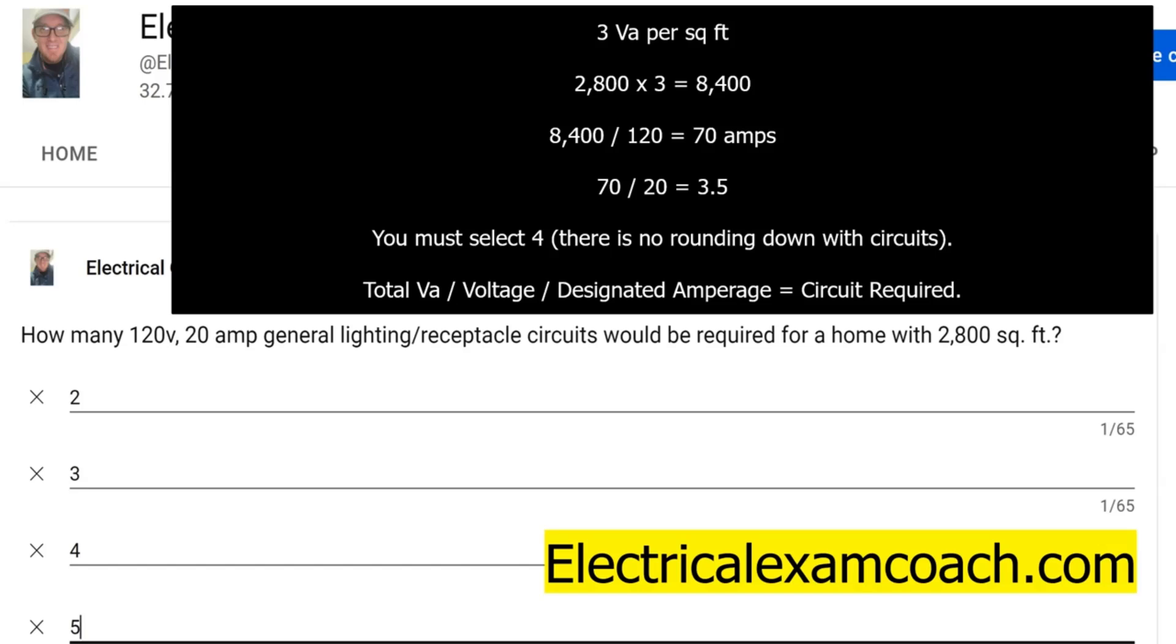When we divide that out, that's going to give us 3.5 and we must select 4 and round up, because there is no rounding down with circuits. You can't have a piece of a circuit, so anything above 3 is going to go up to 4. It's total VA's divided by voltage, divided by designated amperage, and that equals the circuits required.